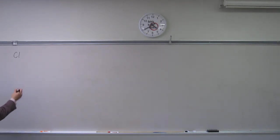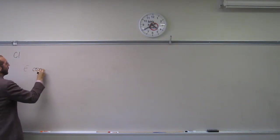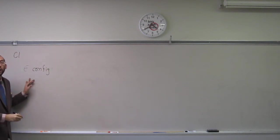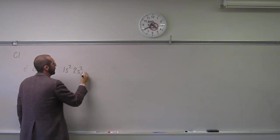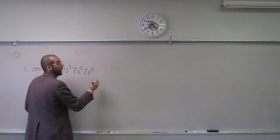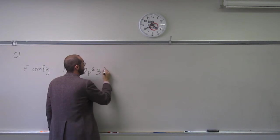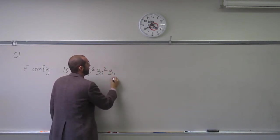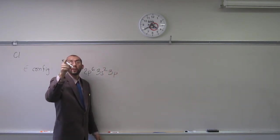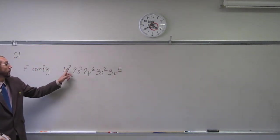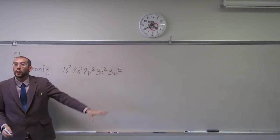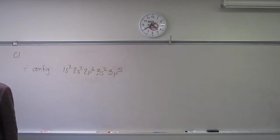So first we need to do is draw the electron configuration. So, what would it be for chlorine? 1s2, 2s2, 2p6, 3s2, 3p1, 2, 3, 4, 5, right? So if you're wondering, you should be able to count all of these numbers, and they should equal the atomic number.